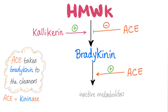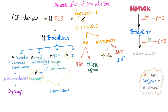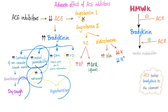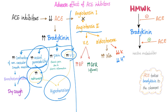Kallikrein helps bring bradykinin into existence. ACE hates kallikrein and its effects. When you are using ACE inhibitors, you are inhibiting ACE and increasing bradykinin, leading to dry cough, angioedema, and natriuresis-driven hypotension due to vasodilation.